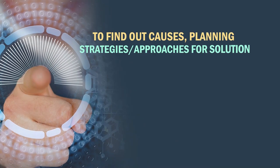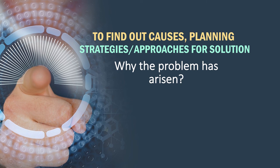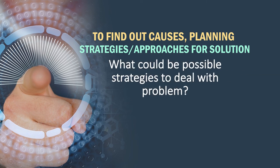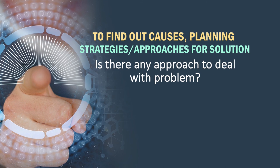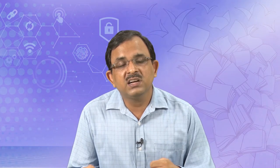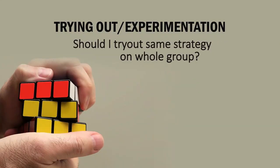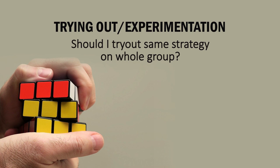If we are facing a problem that is very new with no available solution, or where existing solutions cannot solve it, we think about innovative ways. Then we try to find the reasons why this problem has arisen and what possible strategies could deal with it. The third step is trying out or experimenting — we identify the strategies, then decide whether to try out one strategy on the whole class or divide the class into small groups and experiment with different strategies in different groups.